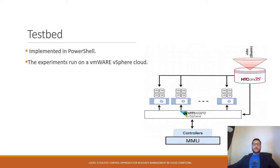The testbed: LOOPS is implemented in PowerShell and the experiments run on a VMware vSphere cloud. As shown in the figure, the job is submitted to HT Condor, which is a distributed system used to distribute jobs to the VMs of the system. And the controllers interact with VMware under the umbrella of MMU in order to take the resource management action.